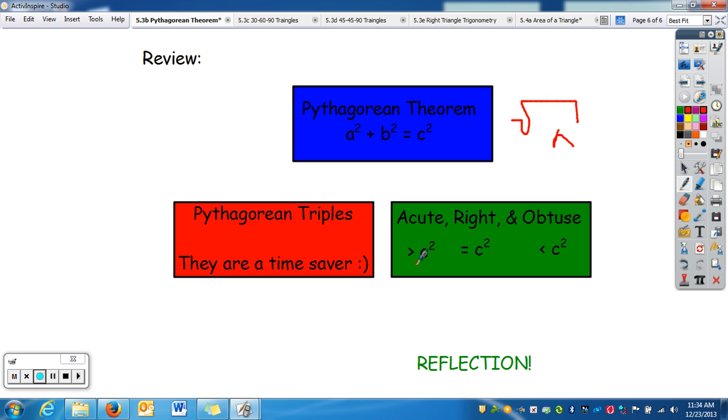Acute is when a squared plus b squared is greater than c squared. When it equals, it is right. And when it's obtuse, it is c squared is greater. Reminder to do your reflection so you get credit for watching this video.